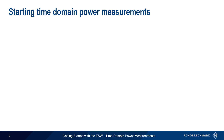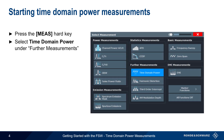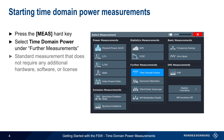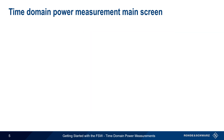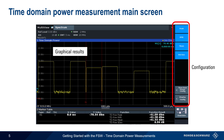To start a time domain power measurement on the FSW, press the Measure hard key, and then select Time Domain Power from the list of further measurements. This is a standard spectrum measurement and does not require any additional hardware, software, or license code. This is the main Time Domain Power measurement screen. Configuration settings are accessed via the buttons on the right. The default view shows both graphical results as well as numerical results beneath them.